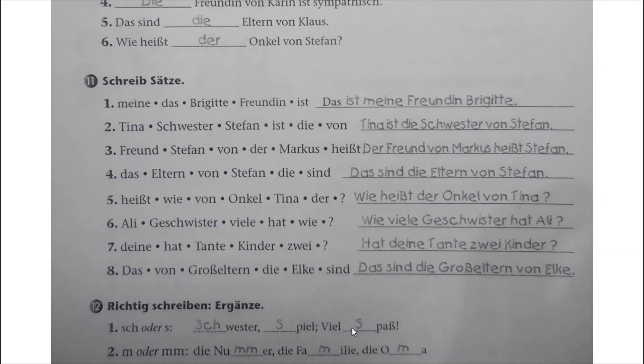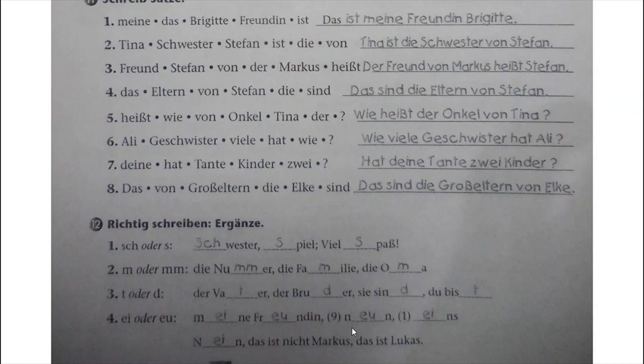Nummer 4: Das sind die Eltern von Stefan. Nummer 5: Wie heißt der Onkel von Tina? Nummer 6: Wie viele Geschwister hat Ali? Nummer 7: Hat deine Tante zwei Kinder? Nummer 8: Das sind die Großeltern von Elke. Numbers 5, 6, 7 are questions. Number 7 is a ja/nein Frage because there is no W-question word like 'wie' or 'was', so the verb is placed at the first position: Hat deine Tante zwei Kinder?